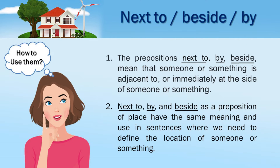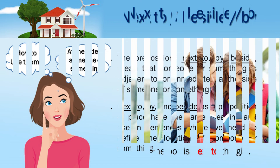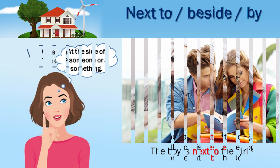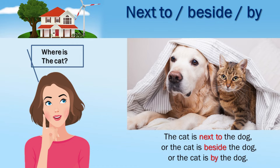Next to, beside, by: 1. These prepositions mean that someone or something is adjacent to, or immediately at the side of someone or something. They have the same meaning and use in sentences where we need to define the location of someone or something. The boy is next to the girl. Where is the cat? The cat is next to the dog. Or the cat is beside the dog. Or the cat is by the dog.